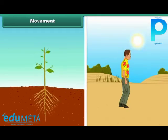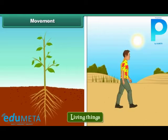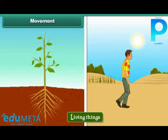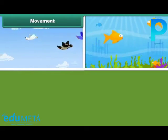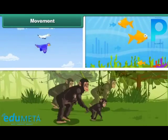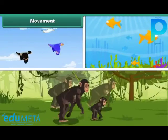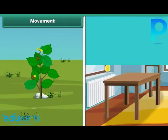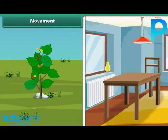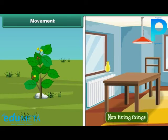Living things show movement. Birds fly in air, fish swim in water, and animals run. Plants are an exception — though living, they cannot move from one place to another. Non-living things, on the other hand, do not show any movement by themselves.